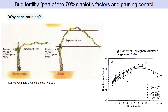This means that climatic conditions, vine water status, and vine mineral status all matter. When practicing cane pruning, the latent bud fertility will vary according to the position of each bud on the cane, and this variation depends on the previous year's climatic and physiological conditions.